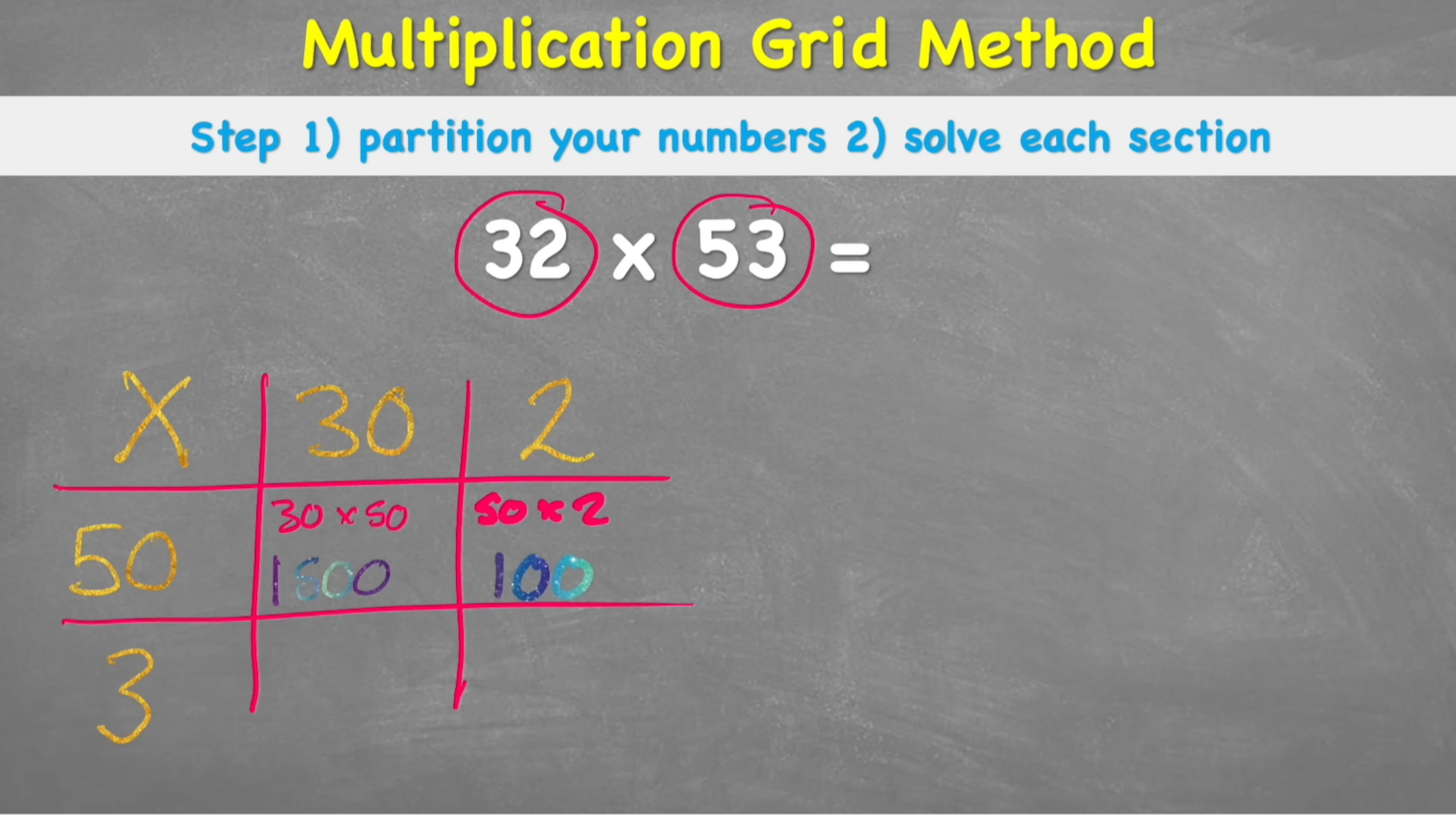Box 3's question is 3 times 30. And again, 3 times 30 might be quite hard for people to work out. Although actually, some people can see that that's 90. But let's see if we get the same answer. So we think it's 90. Let's check. Let's do 3 times 3 by getting rid of the zero. That equals 9. Put back our zero. Good. We get 90 as well.